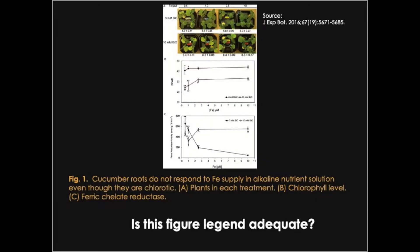Let's take a look at an example. We have this figure in a results section, and we have this figure legend that says Figure 1: Cucumber roots do not respond to iron supply in alkaline nutrient solution even though they are chlorotic. Panel A: Plants in each treatment. Panel B: Chlorophyll level. Panel C: Ferric chelate reductase. The question is, is this figure legend adequate? Does it have all the information that needs to be in a figure legend?